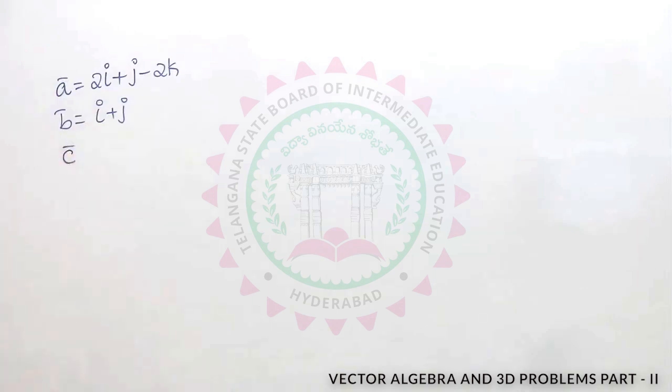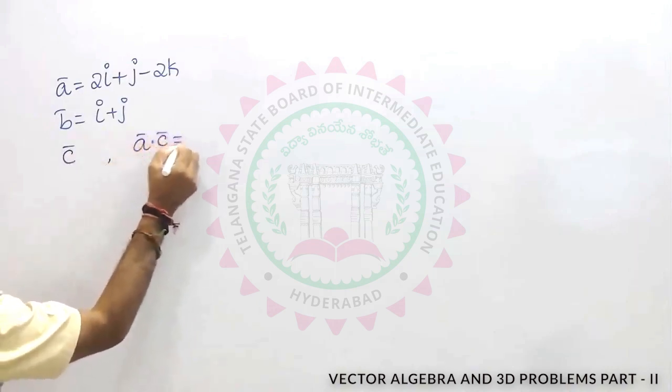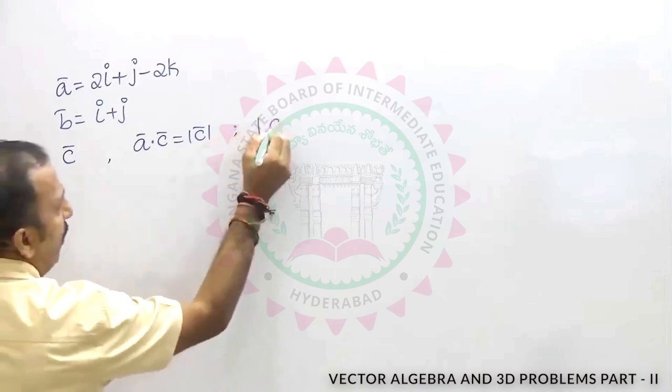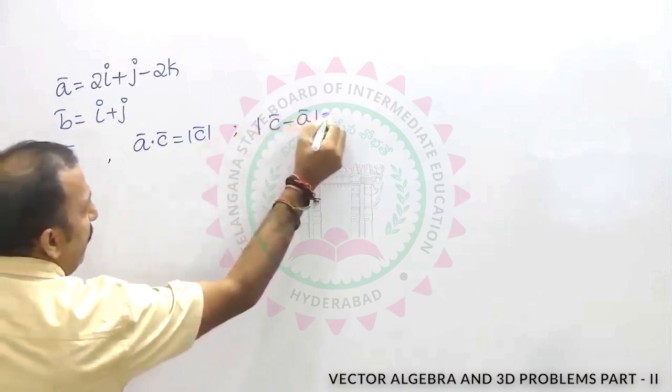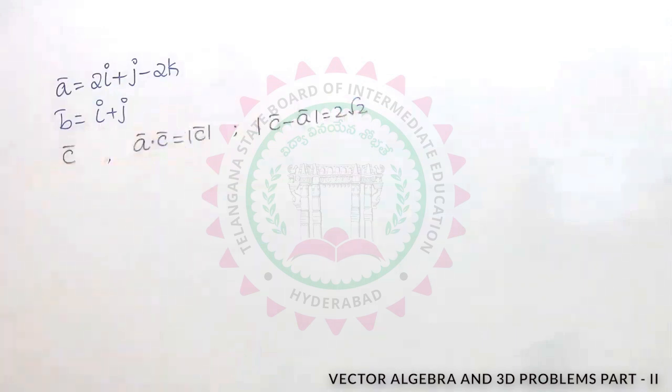c bar is a vector such that a dot c is equal to mod c and modulus of c minus a is equal to 2 root 2. Modulus of c minus a is equal to 2 root 2.